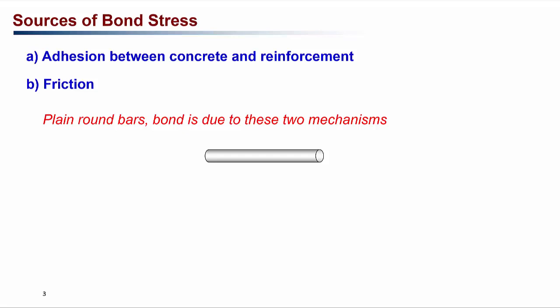The bond mechanism between concrete and reinforcement steel can be classified into three different mechanisms. For a smooth round bar embedded in concrete, the bond mechanism is mainly by adhesion and friction between the concrete and the reinforcement. Both of these effects are quickly lost when the bar is loaded in tension — because when the reinforcement is loaded in tension, it elongates, reducing its area, and the adhesion and friction between concrete and steel are lost. For plain round bars, bonding is not very good, and hence we do not usually use plain round bars for reinforcing concrete structures.